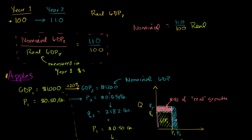And remember, this is nominal GDP in year two, this is real GDP in year two, measured in year one dollars. Or we can divide both sides of this equation by 110 over 100, and then we get nominal GDP in year two divided by 110 over 100 is equal to real GDP.